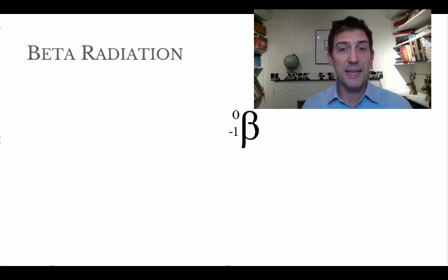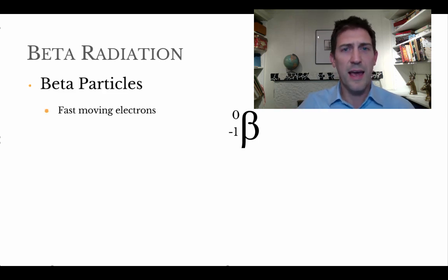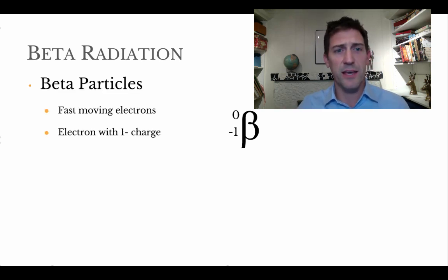Next one is beta decay, or beta radiation. You can see the symbol for it there, and basically this symbol is telling us that we must be dealing with electrons, or an electron with a negative 1 charge. Now, how can that be? If we go back to what we just learned on the previous slides,